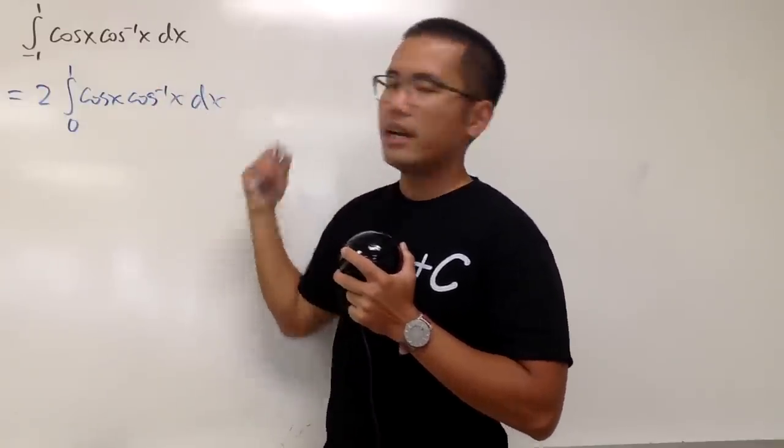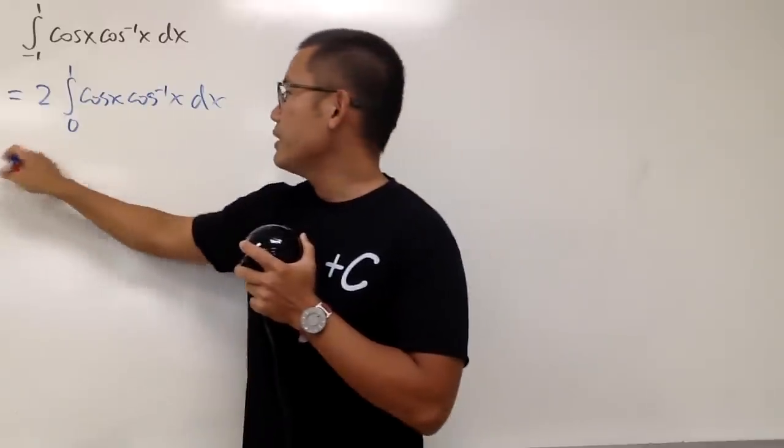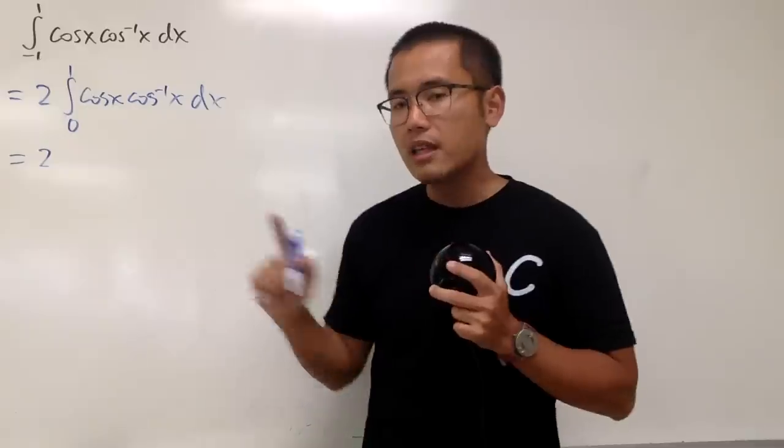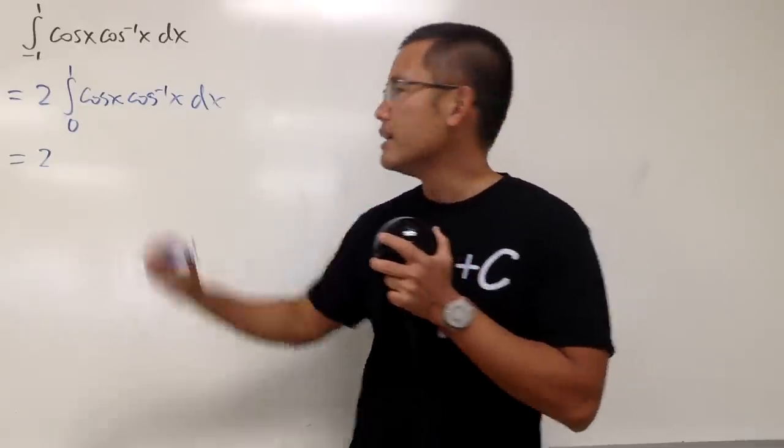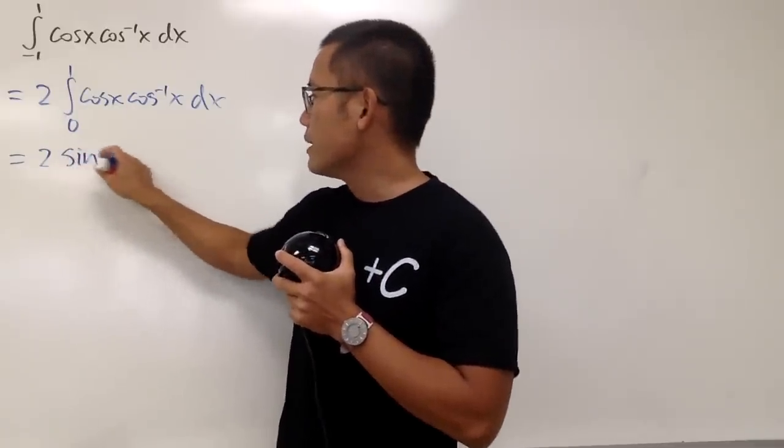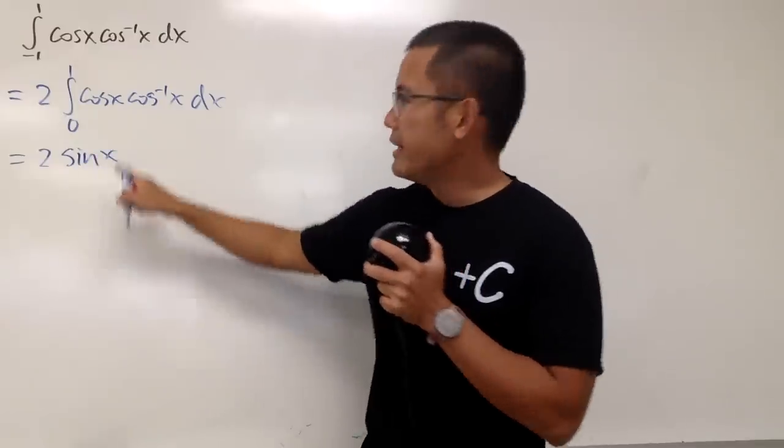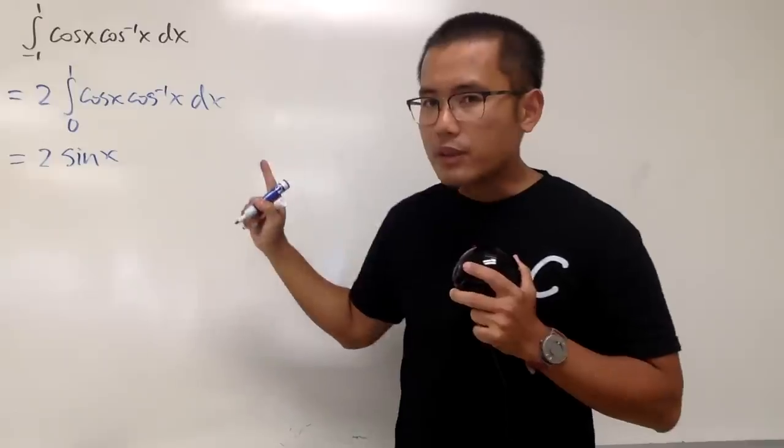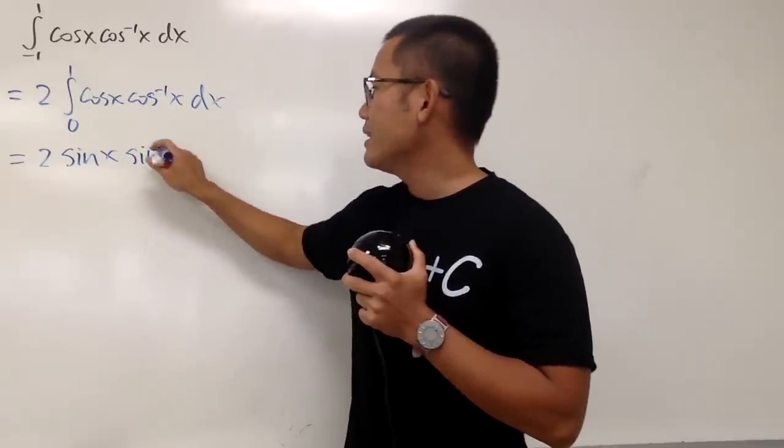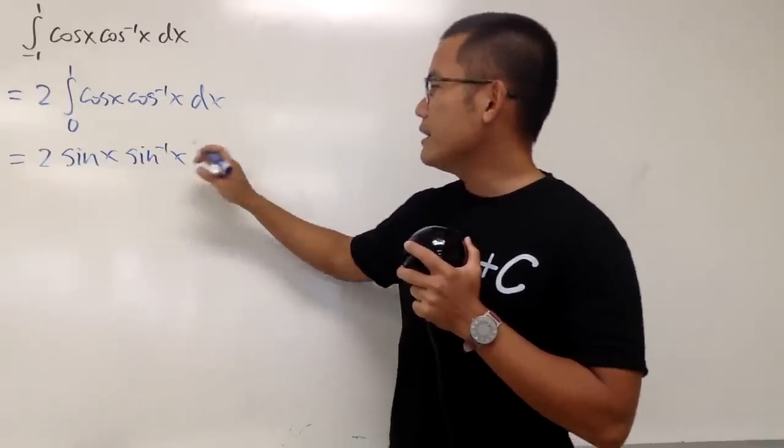And now we can integrate. Let's put down the 2 first though, and as we all know, the integral of cos is positive sin. So let's put that down right here. Keep in mind this is positive sin. And then integrating cos inverse, we get sin inverse, right? And that's pretty much it.